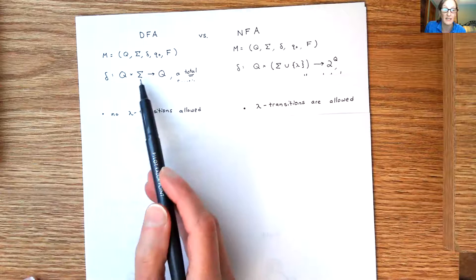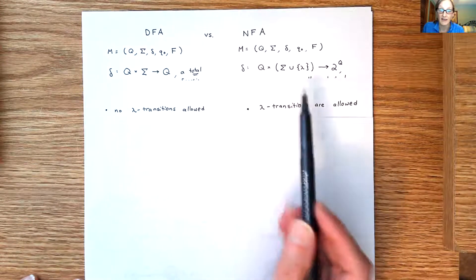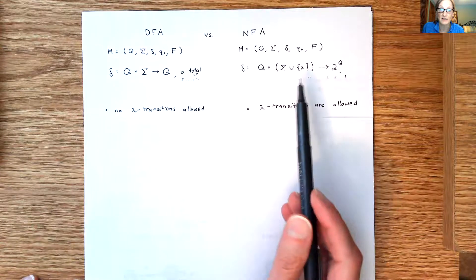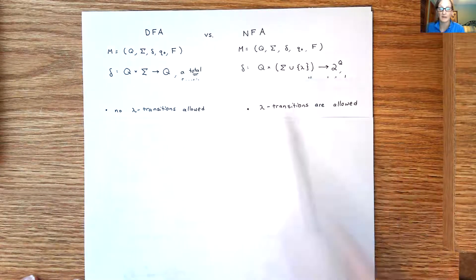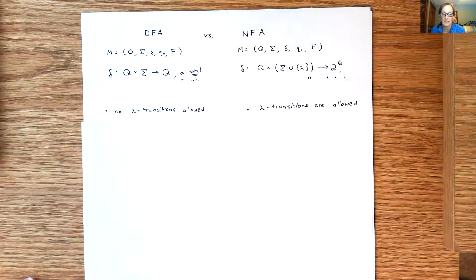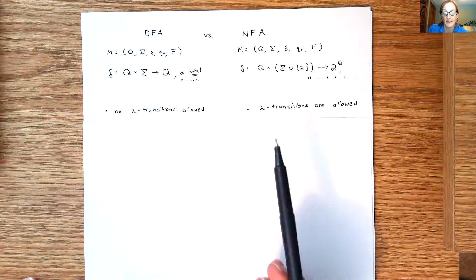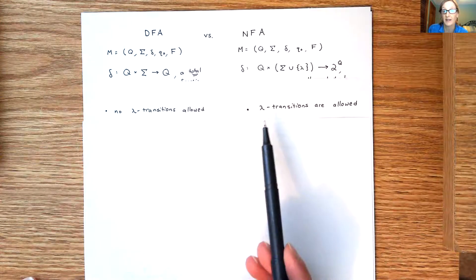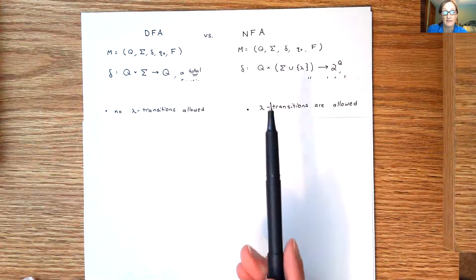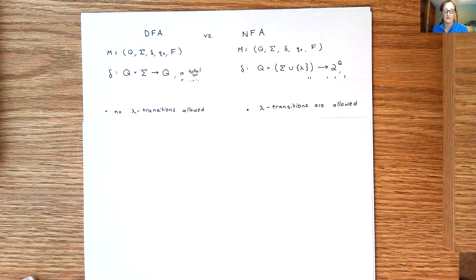So we don't have lambda as part of the domain for a DFA, but in an NFA lambda transitions are allowed because it's part of the domain. So that's the first observation. In other words, anytime you're looking at the state diagram for a finite automaton, if you see lambda in here it's automatically an NFA. Lambda is only allowed in an NFA.